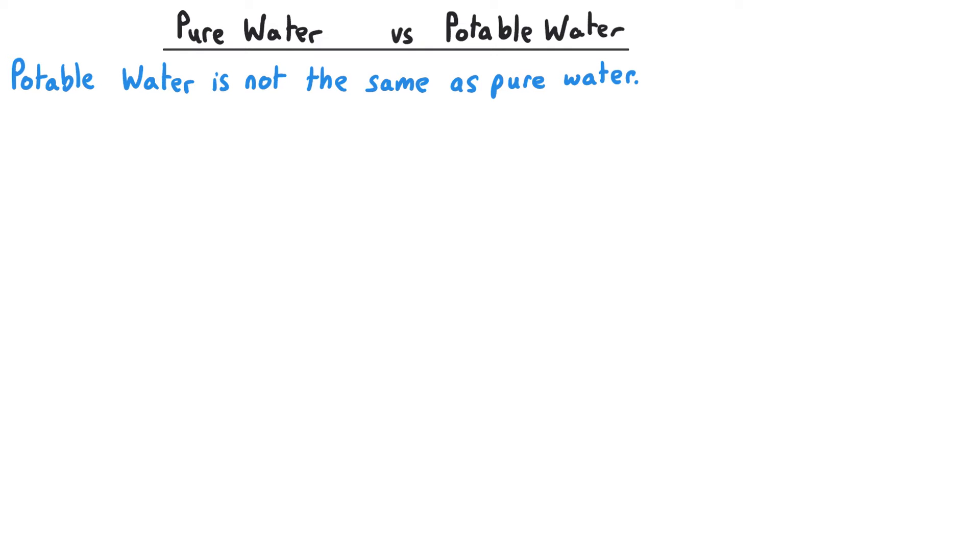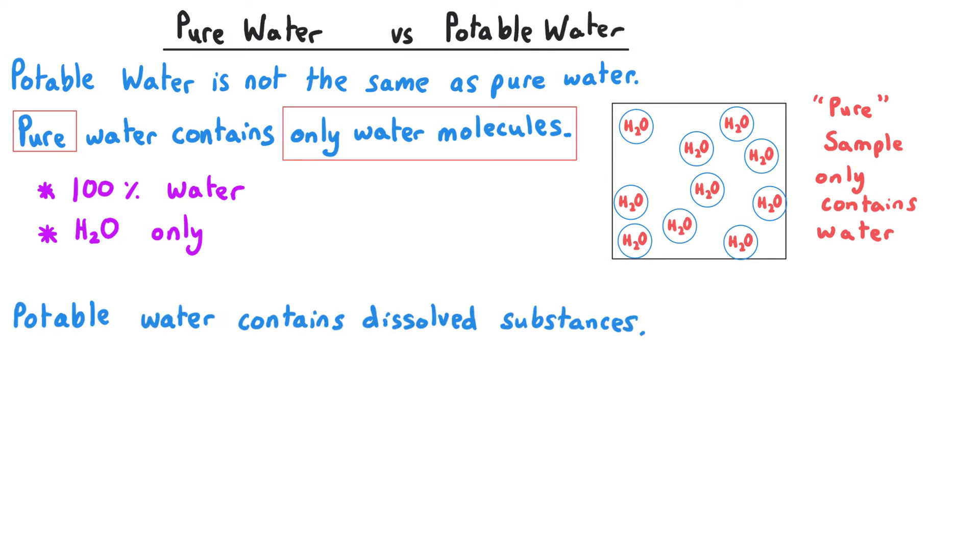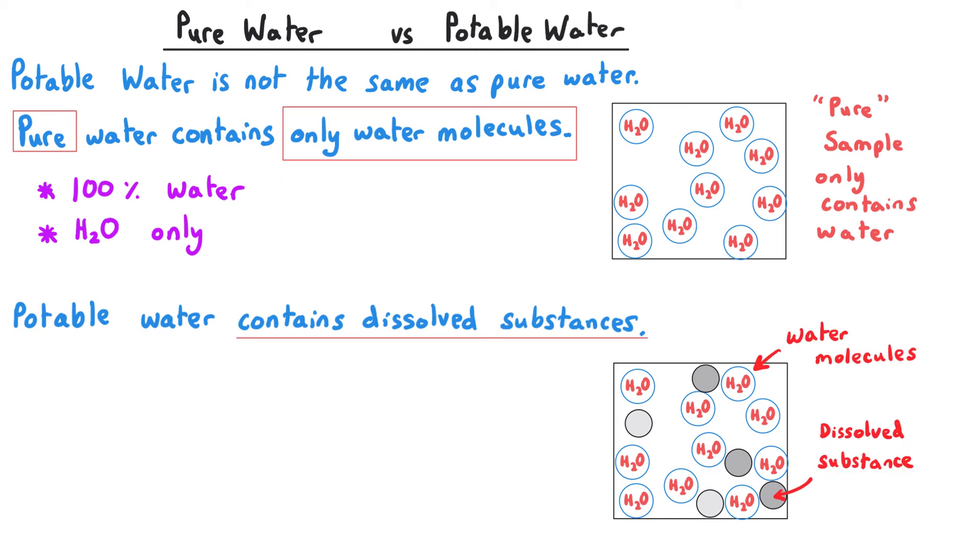Potable water is not the same as pure water. Pure water contains only water molecules—if anything is pure it needs to be 100% of that thing, so 100% H2O molecules as per this diagram here. Potable water contains dissolved substances in such low concentration as to be deemed safe or have no health risks at all, so their presence is not important.